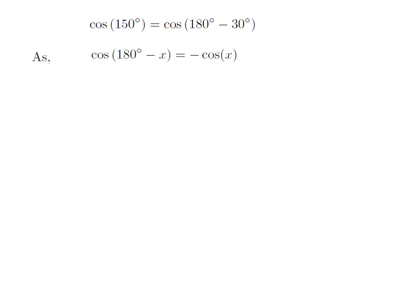As we know, the trigonometry identity cosine of 180 degree minus x is equal to minus cosine of x.